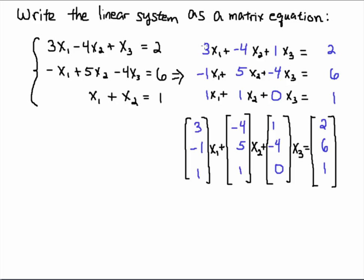Now notice that I have a vector here: 3, -1, 1. I could have that perspective and I can factor out the x1 here. I take -4, 5, 1 and I can factor out the x2 here, and I take the 1, -4, 0 and I can factor out the x3 here. It's a perfectly legitimate vector operation. A scalar times a vector gives you something back in the vector space.